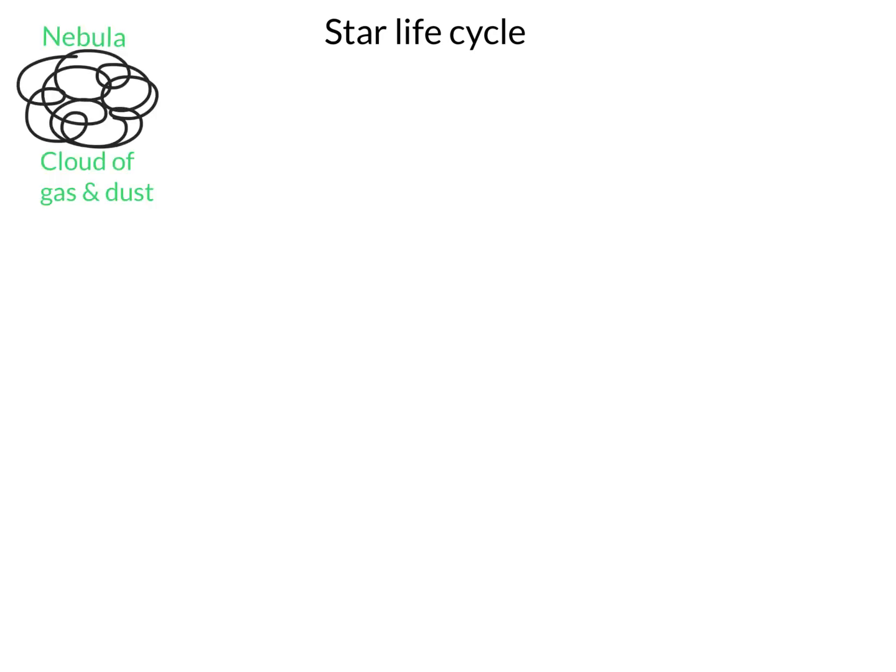We're going to start out with our nebula. Our nebula is just a cloud of gas and dust. This is a very disorganized mass of material out in space that probably came as a result of another star exploding.